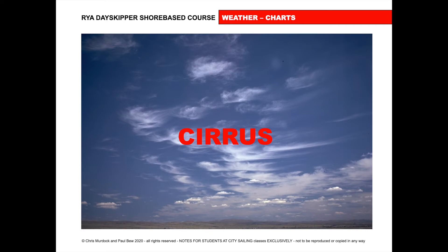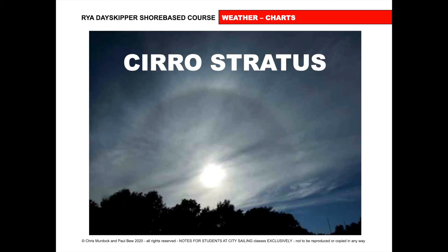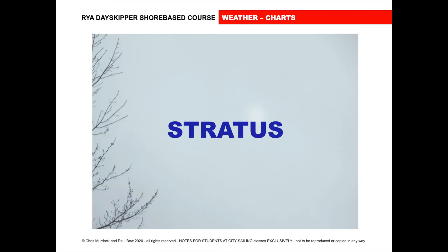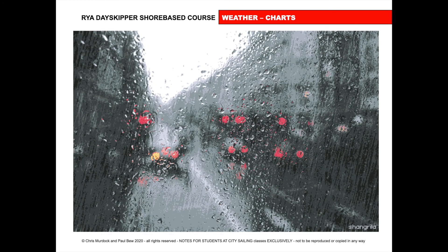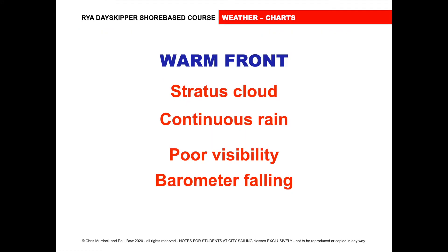So the first cloud we'll see will be the cirrus cloud — sometimes called mare's tails. It's very high up and it's wispy. Cirrostratus is layered cirrus. Sometimes when we see the sun, we see a sort of halo around it. So if we see a halo on the sun, that means that a front's coming through, and it's likely to rain and the weather's likely to change. Cumulostratus means layered fluffy clouds. And then when we get the front, it will rain. So on the warm front, we'll get stratus cloud, continuous rain, poor visibility, and the air pressure will fall.